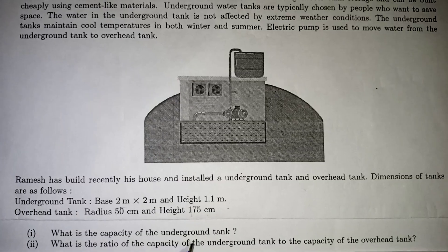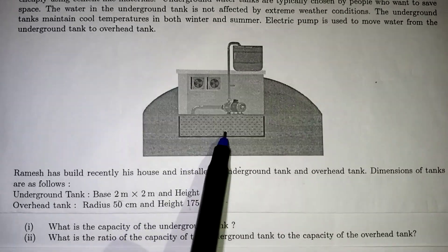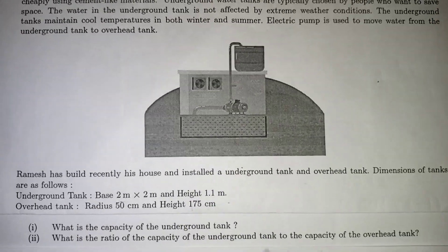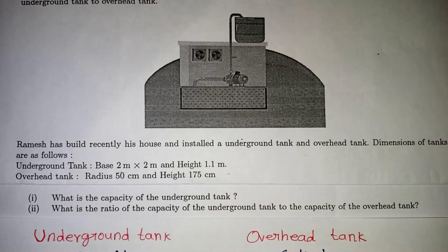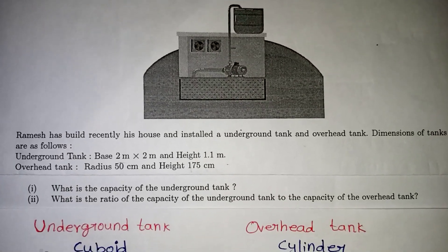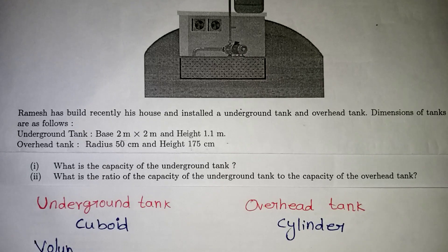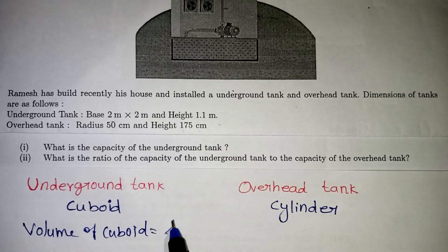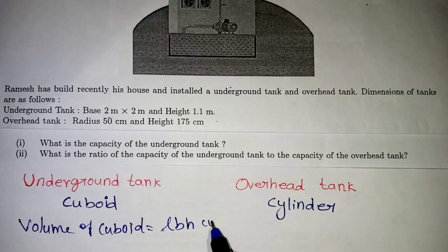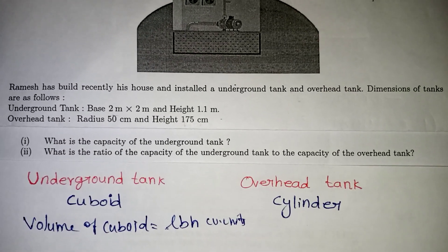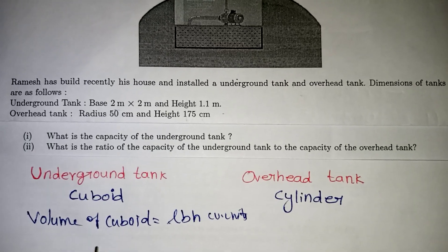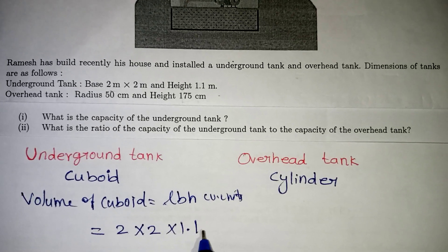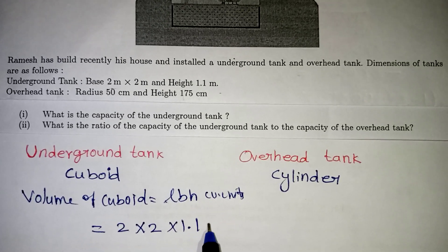What is the capacity of the underground tank? The underground tank is cuboid-shaped, so the capacity is the volume of the cuboid. The formula is Volume = L × B × H (cubic units). We have length = 2m, breadth = 2m, height = 1.1m.